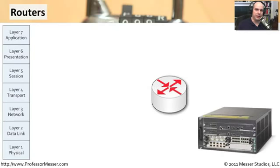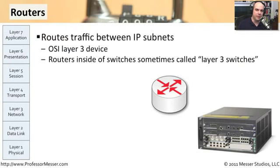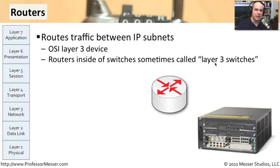Since switches operate at layer two, everybody is on the same subnet. So to be able to separate our network into other pieces, we need something to move up to a higher level — OSI layer three. And that would be a router. Usually routers are in the center of the network, connecting all of these different switches to each other, and perhaps connecting an internet connection as well. Any time you have to connect two different IP subnets, you're going to need a routing function somewhere. This may be on a standalone device, or it may be part of a software or hardware module within a switch — which is why you'll sometimes hear the term a layer three switch.